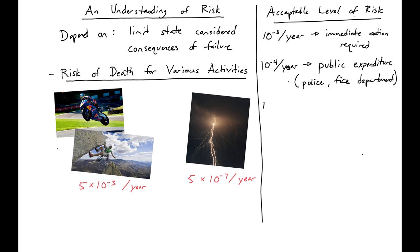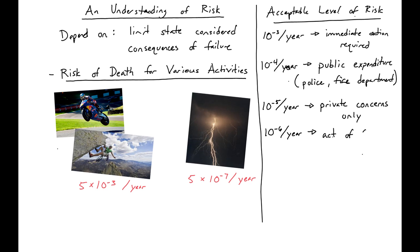Then we have 10 to the negative fifth per year, which is a private concern only — risks that people themselves would be expected to take care of. And finally, we have 10 to the negative sixth per year, which we'll consider an act of God, where there aren't really means that can or should be taken to prevent these risks.